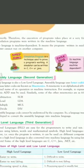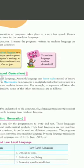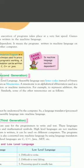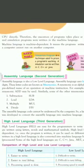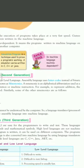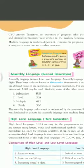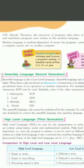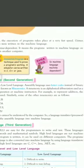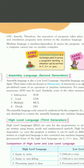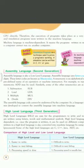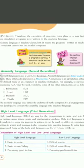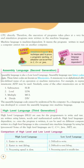Therefore, the execution of programs takes place at a very fast speed. Games and simulation programs are written in machine language. Machine language is machine dependent, meaning programs written in machine language cannot run on another computer — they can only run on the same computer.